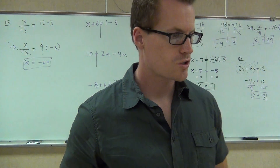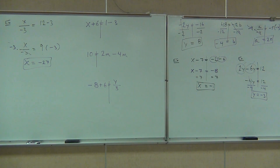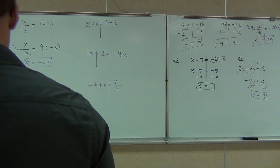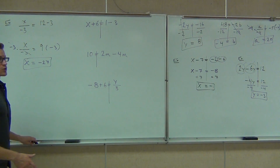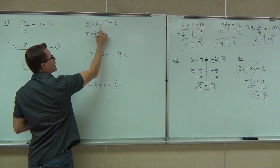Combine like terms first, then you should have a problem like we've seen before. So the first one, we do have some like terms. Not on the left-hand side — that's just going to be x plus 6. There's nothing we can combine there.